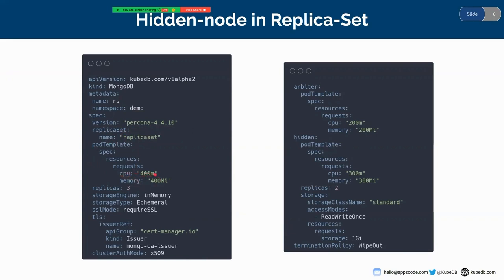This is the pod template where I have set the CPU to 400 millicores and memory to 400 megabytes. The replica count is 3, so there will be one primary and two secondary members in this replica set. The storage engine is set to inMemory. I have also enabled the required SSL mode, so I need to refer to the issuer here, where I have used the cert-manager issuer named MongoCA issuer. This is the arbiter spec, which is similar to the primary and secondary replica set pod template. And this is the hidden template, where I have used a CPU of 300 millicores and memory of 300 megabytes. The storage class name is set to standard, which is the default storage class of a kind cluster. The termination policy is set to WipeOut.